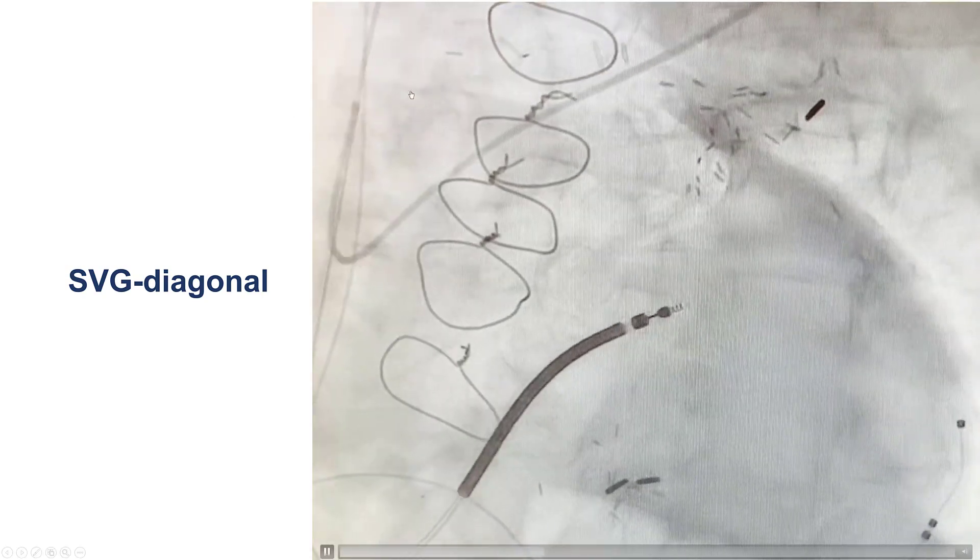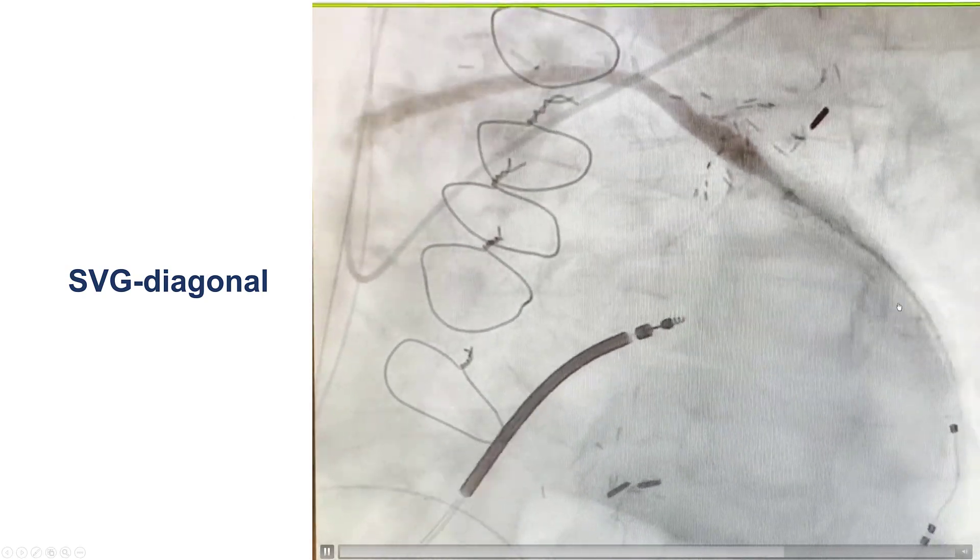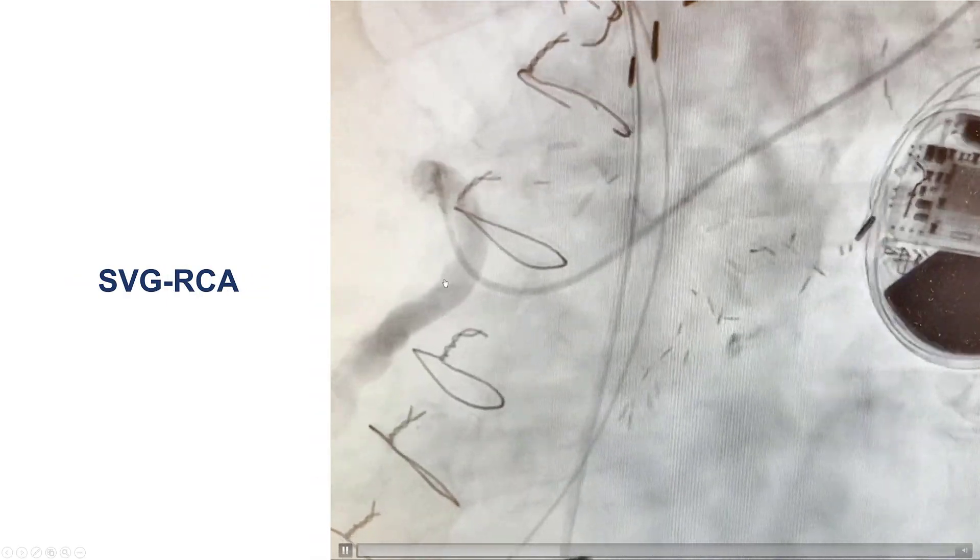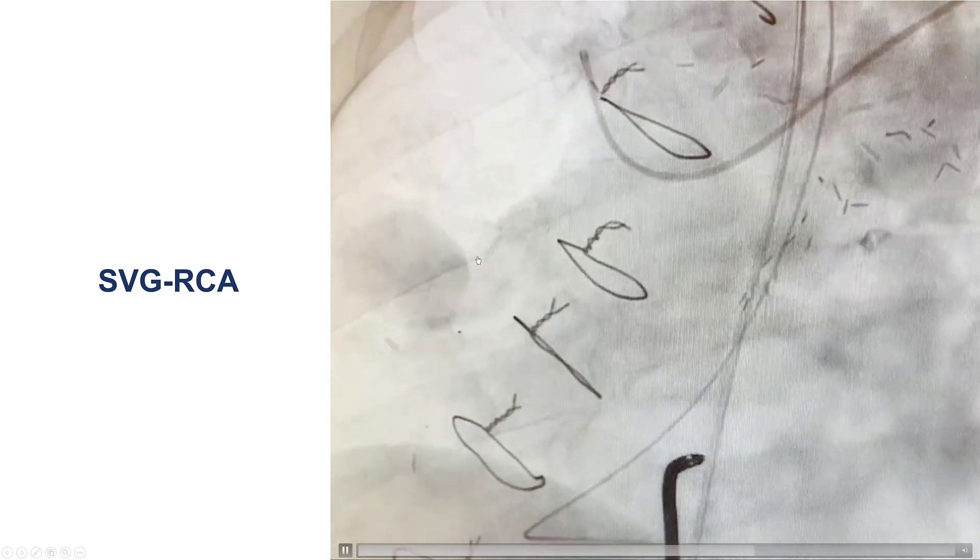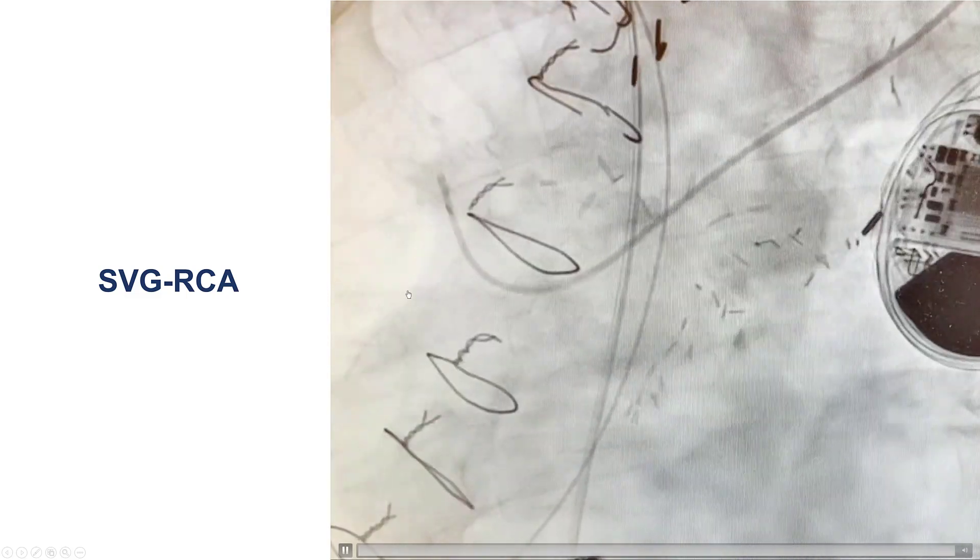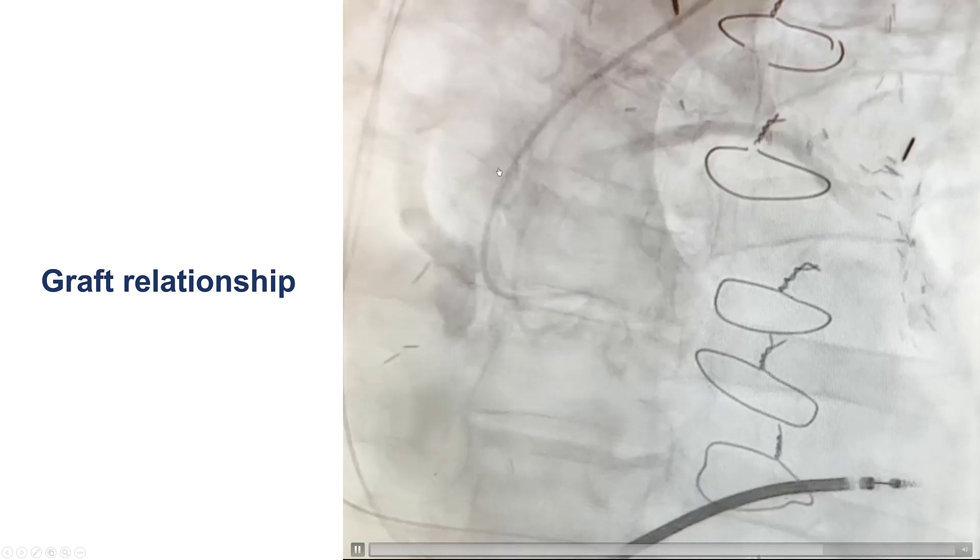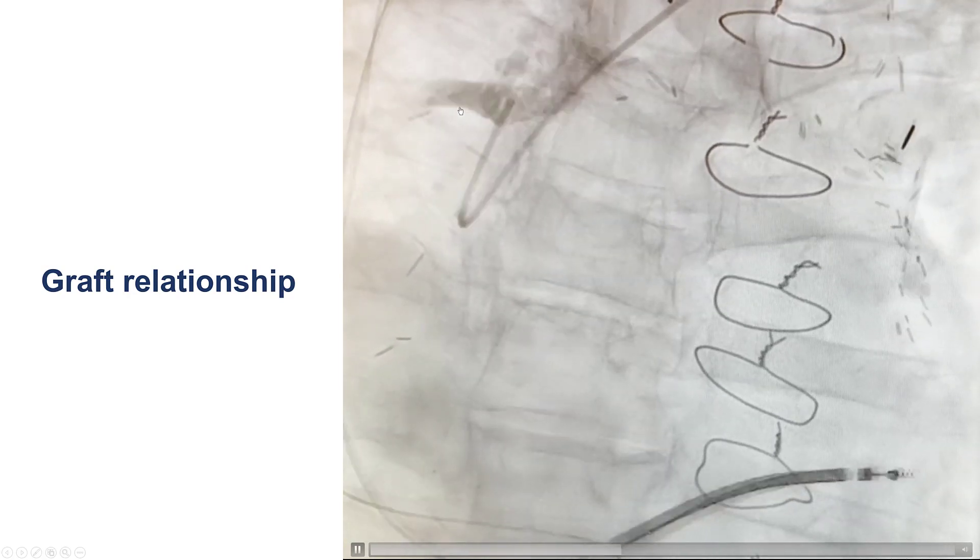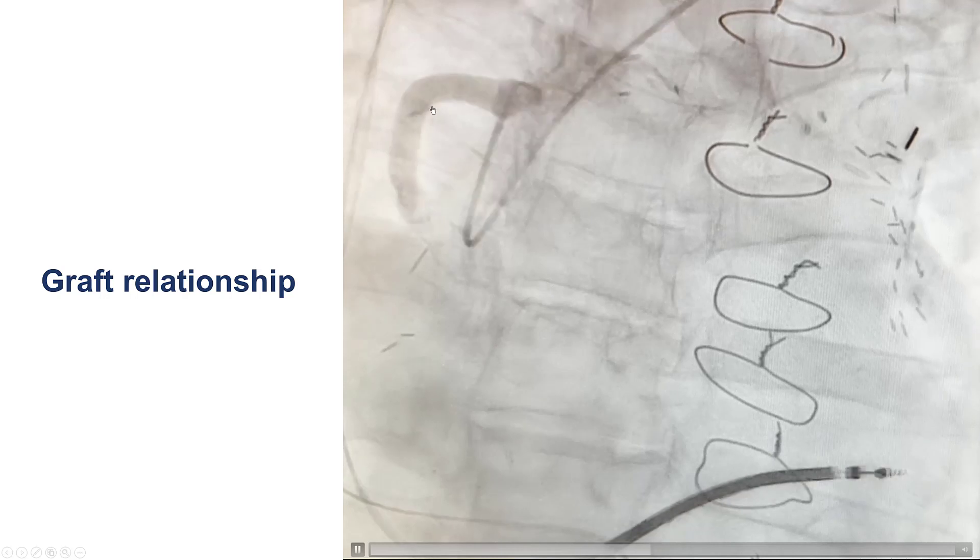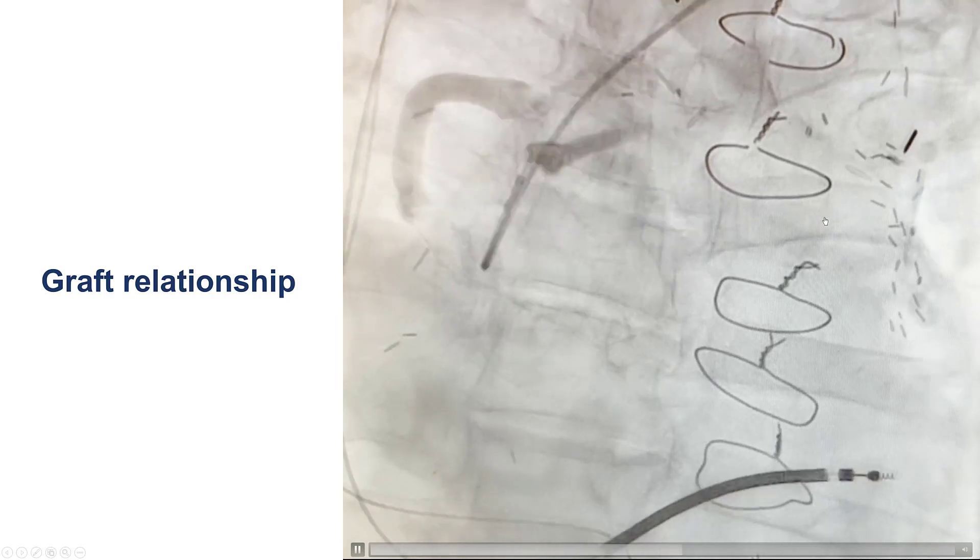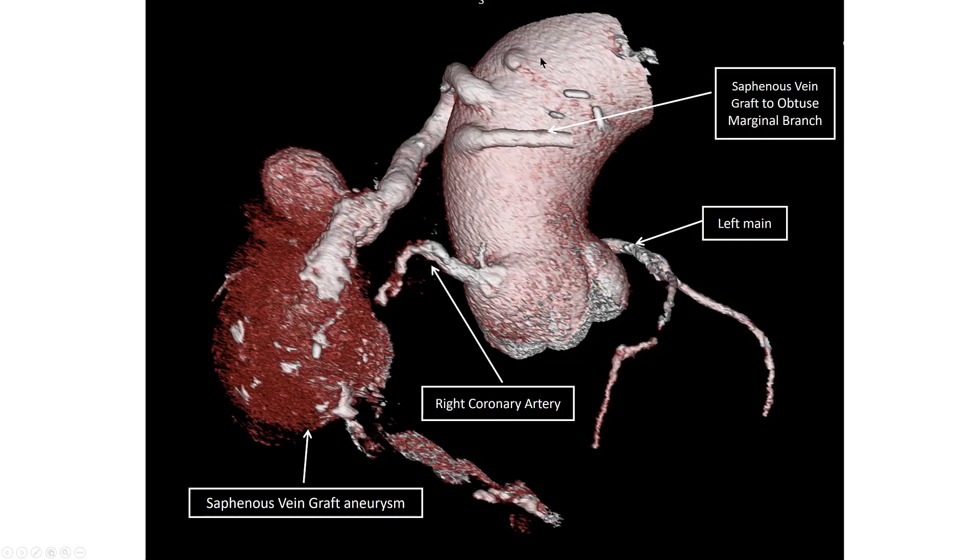The patient had a vein graft to the diagonal branch that was patent with good flow, and the vein graft to the right coronary artery was poorly visualized because contrast was entering into this large cavity of the aneurysm. This is a simultaneous injection showing the spatial relationship of the vein graft to the right coronary artery that is aneurysmal, as well as the vein graft going to the diagonal branch. And this is a coronary CTA demonstrating the saphenous vein graft aneurysm.